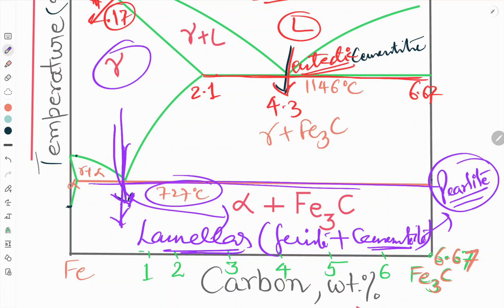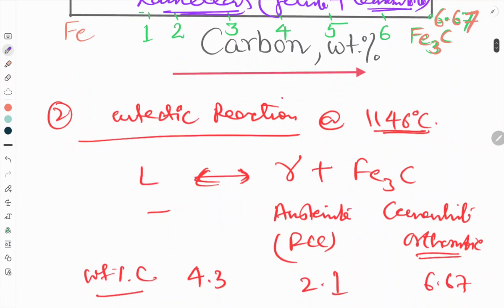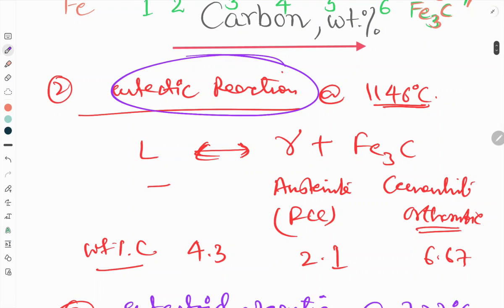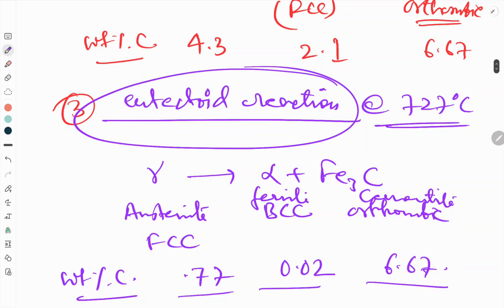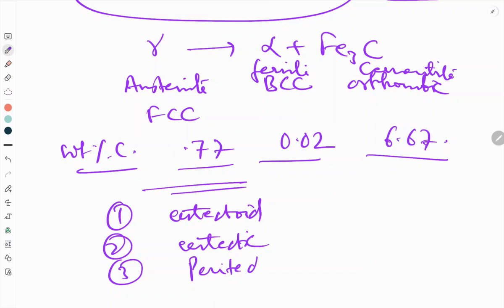So these are basically the three reactions found in iron-carbon phase diagram. First is eutectoid, second is eutectic, and third is peritectic. This happens at 727 degree centigrade temperature, this happens at 1146, this happens at 1490 degree centigrade temperature.